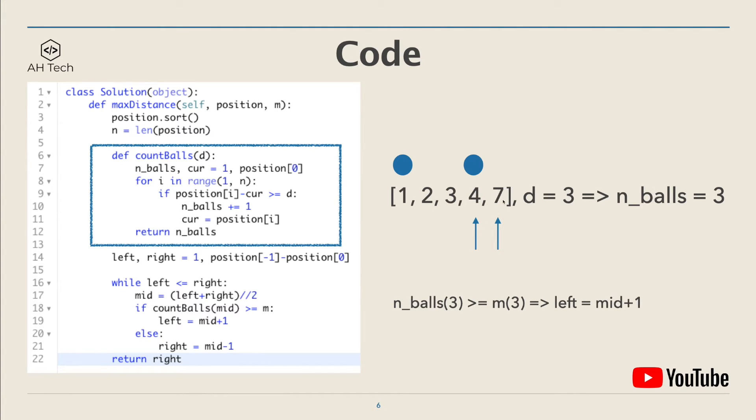For the next element, 7 minus 4 is also equal or larger than 3, so we have to put another ball here. So finally, we have to put three balls in order to make the minimum distance equal or smaller than 3.